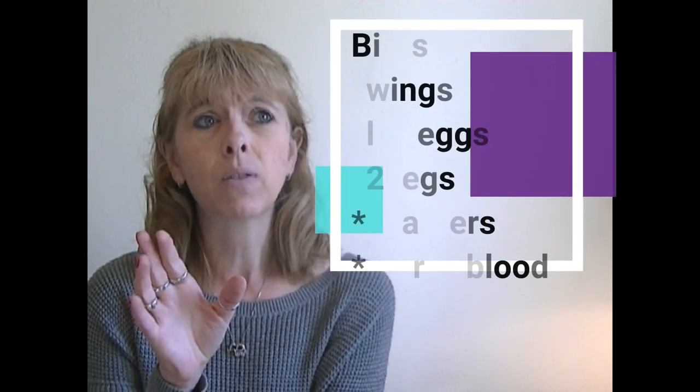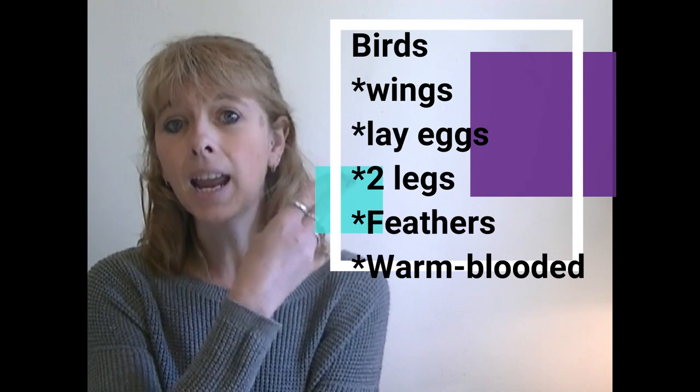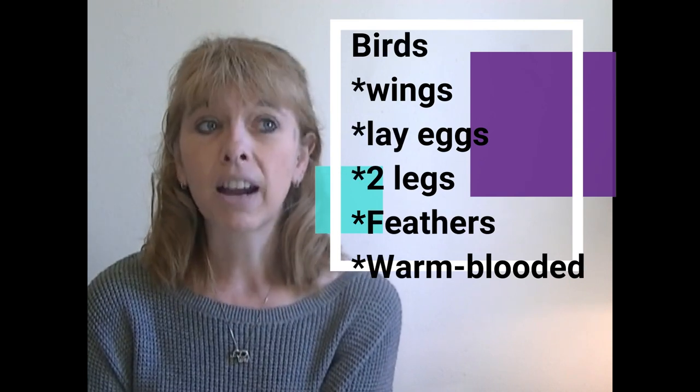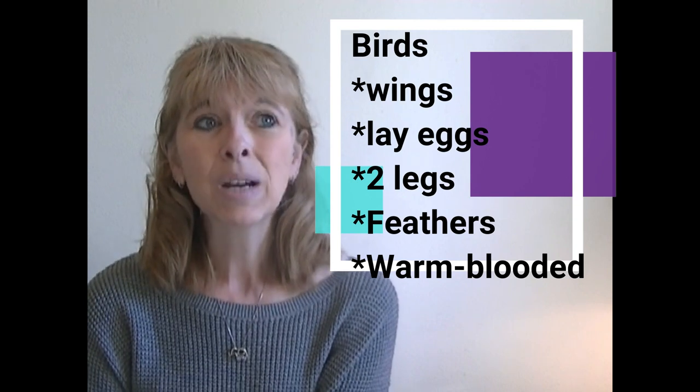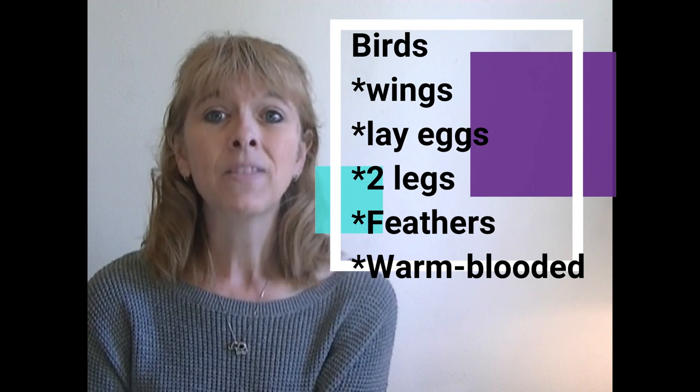So today we're going to be categorizing different kinds of animals. Let's talk about the different kinds of animals that we are going to be categorizing today. Today we're going to be talking about birds. Now, there are special things about birds that make them different from other types of animals. Birds have wings. Birds lay eggs. Birds have two legs. Birds have feathers. And they are warm blooded.